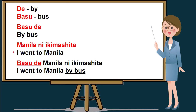We will be constructing another sentence: I went to Manila. In Nihongo, as what we've learned in our previous lesson, we will be using a verb, ikimashita, which means went. And a particle ni, which indicates location. For Manila, which is a place or location. So, I went to Manila will be Manila ni ikimashita.